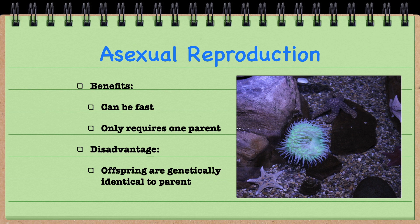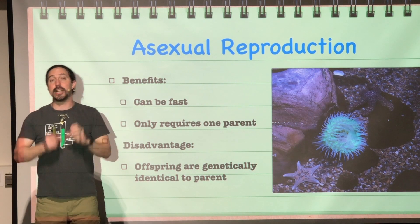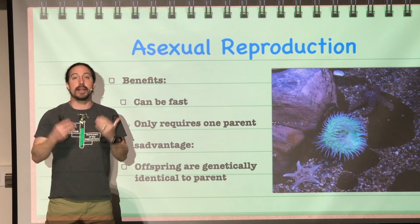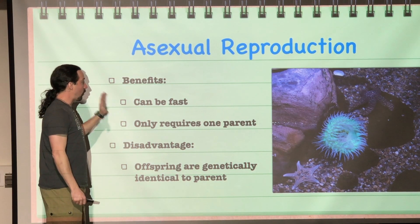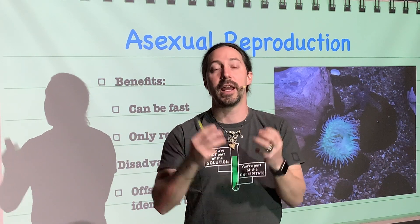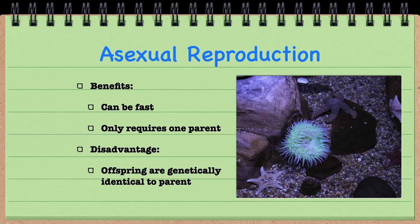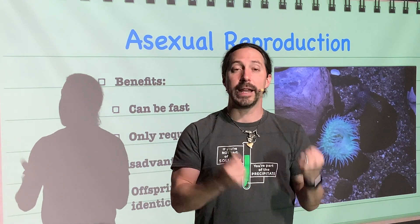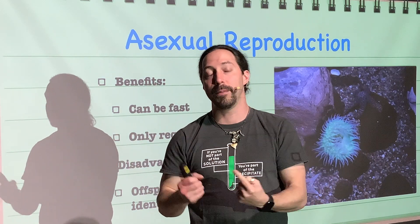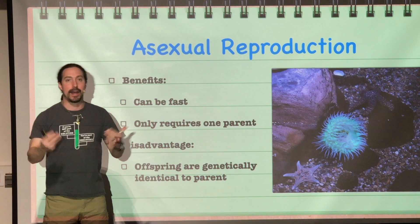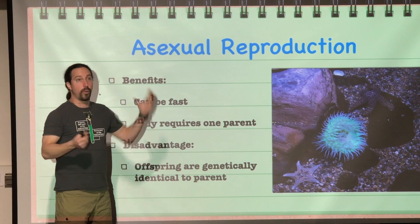Asexual reproduction does have some benefits. First, it can be extremely fast. When bacteria reproduce, they can do so in approximately 20 minutes. And it only requires one parent, which means if an organism finds itself alone or in a very small population, that is not a problem for it to reproduce. The disadvantage, though, is that the offspring are genetically identical to the parents. If some factor comes into play that negatively impacts the population, the entire population would be affected in the exact same way, which could cause that population to go extinct.